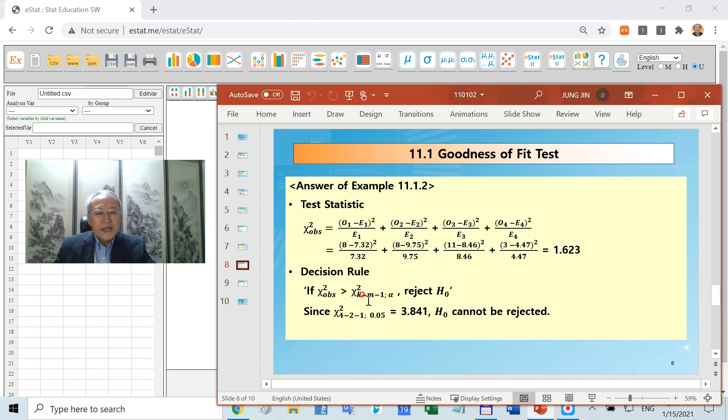This time we estimated the population mean and standard deviation. Therefore, M should be two. You can calculate chi-square with one degree of freedom, right tail 5th percentile is 3.841. But your test statistic is 1.623. Therefore, H0 cannot be rejected.